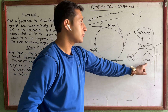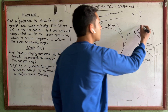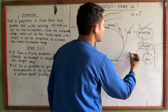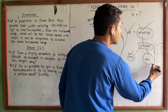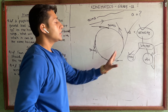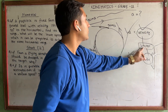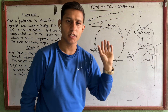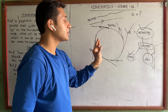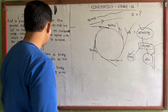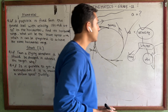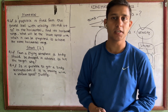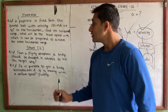Therefore, if the direction changes, there will be acceleration. For example, in circular motion, the magnitude of velocity is constant, but the direction keeps changing — so there is acceleration. This is an example of uniform circular motion. I will explain the full topic with two or three more questions in the next chapter. Thank you for listening. See you soon.